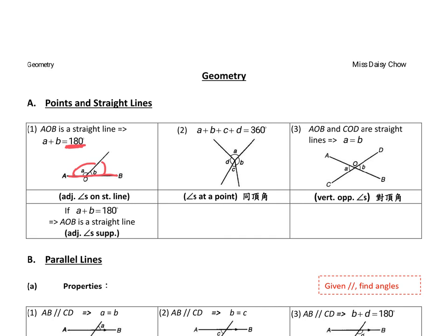And if it is a round angle, the sum would be 360. So the second reason would be A plus B plus C plus D would be 360, angles at the point.